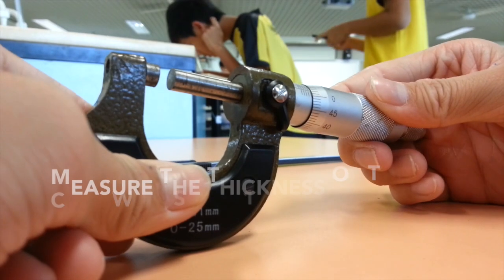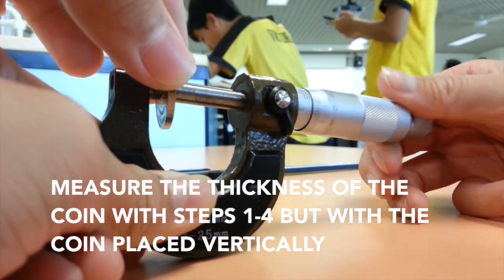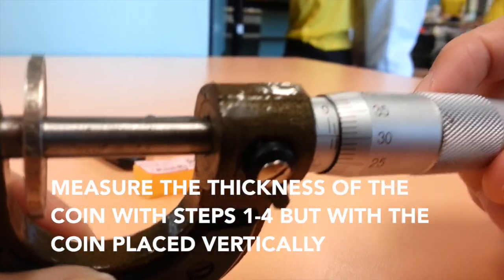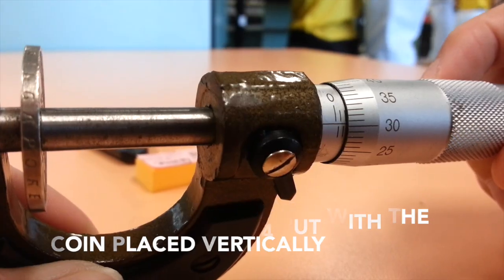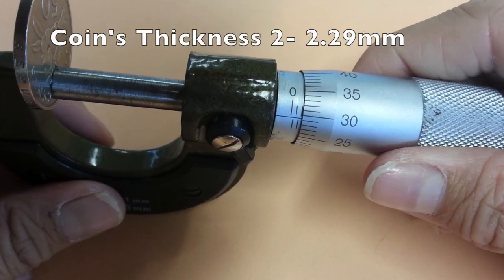Next, we will repeat the same steps to find the thickness of the coin, but we will have to put the coin vertically between the anvil and spindle. The reading of the thickness is 2.3 mm. Similarly to the diameter, we will repeat the steps two more times to find the average thickness.